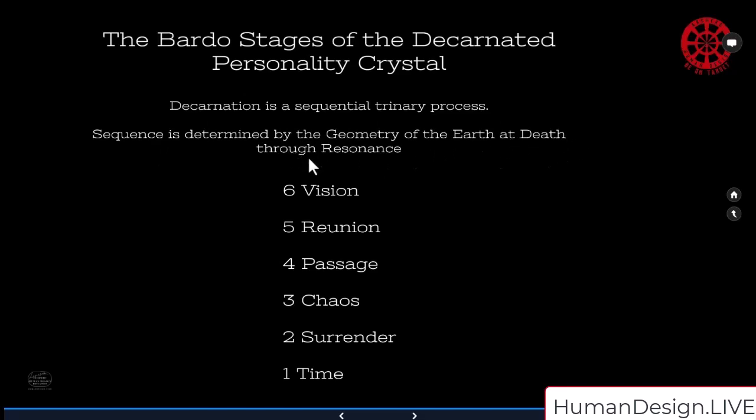So it's the transit Earth at death through resonance. When we're looking at the moment of death, what we're looking for is the position of the Earth and the importance of the line. So here's the line values: one is Time, two is Surrender, three is Chaos, four is Passage, five is Reunion, and six is Vision.